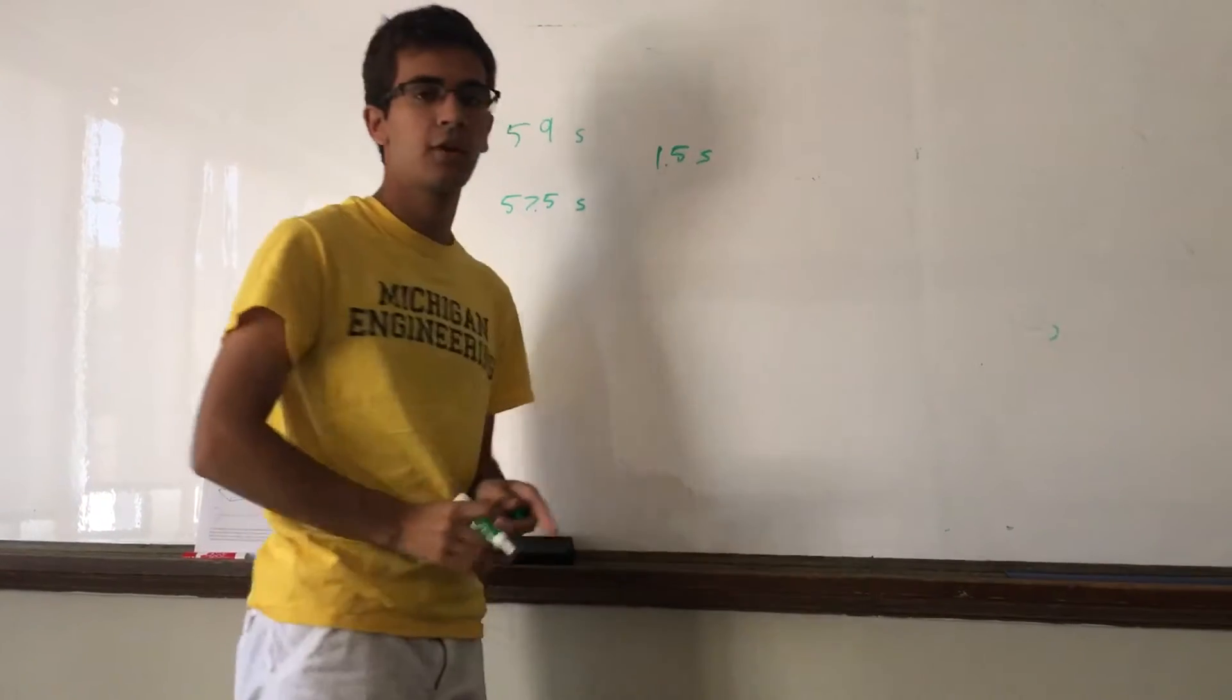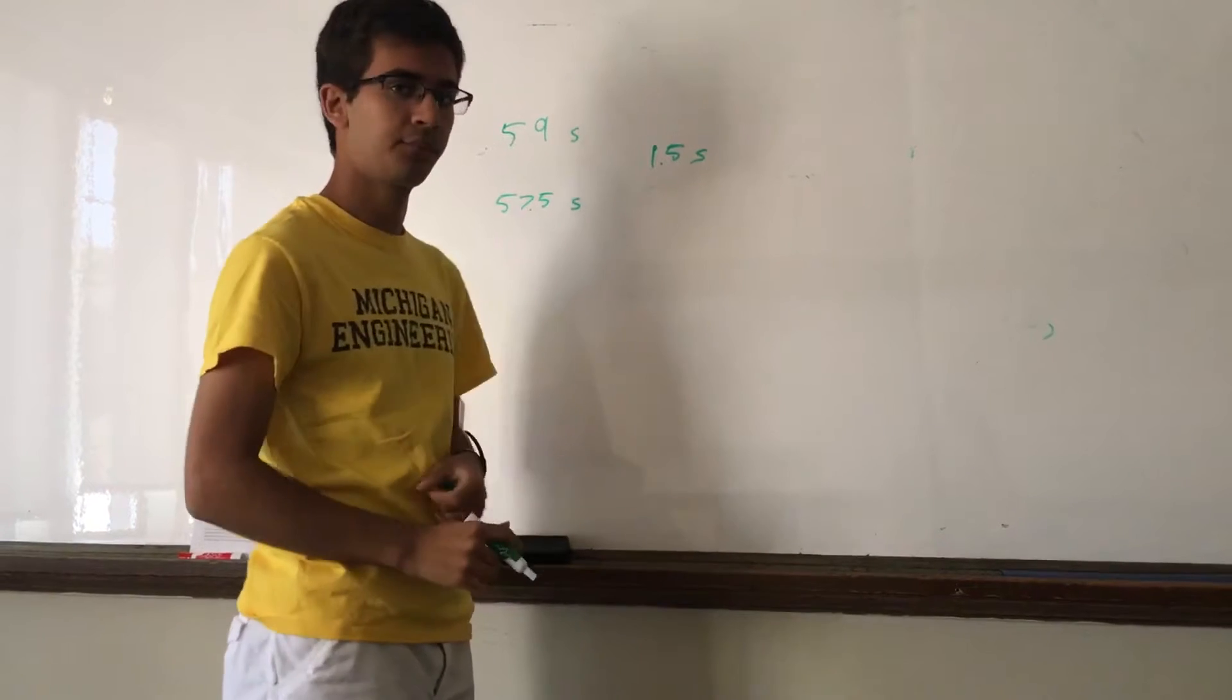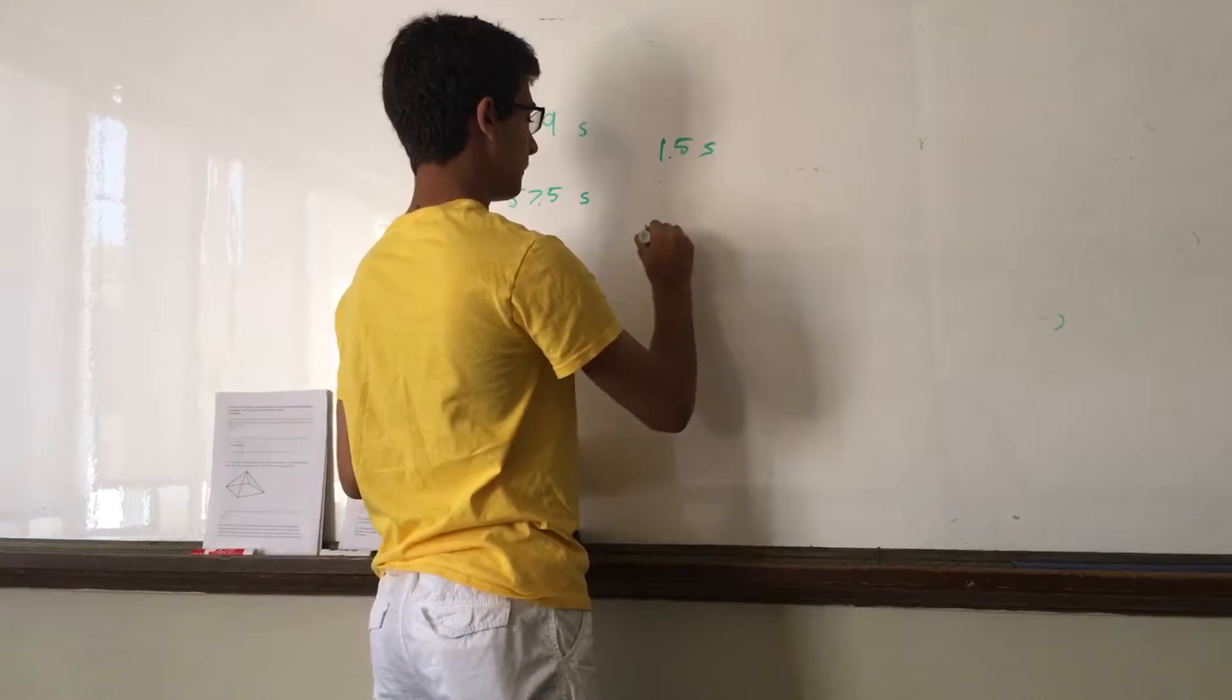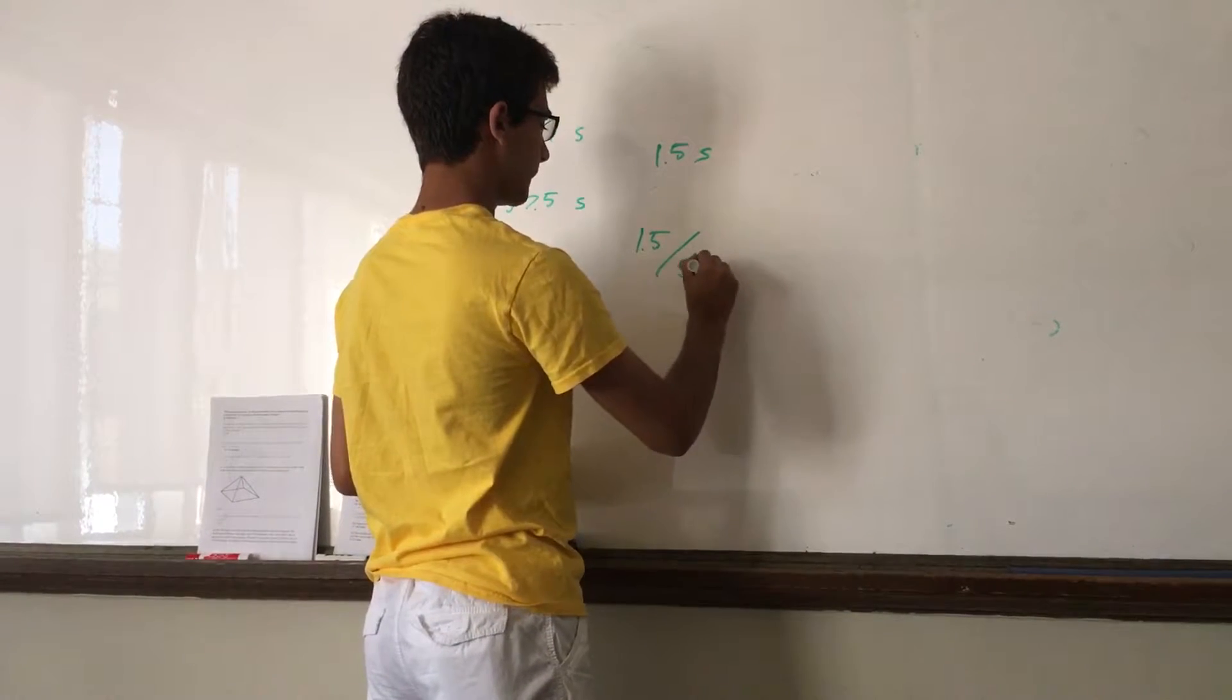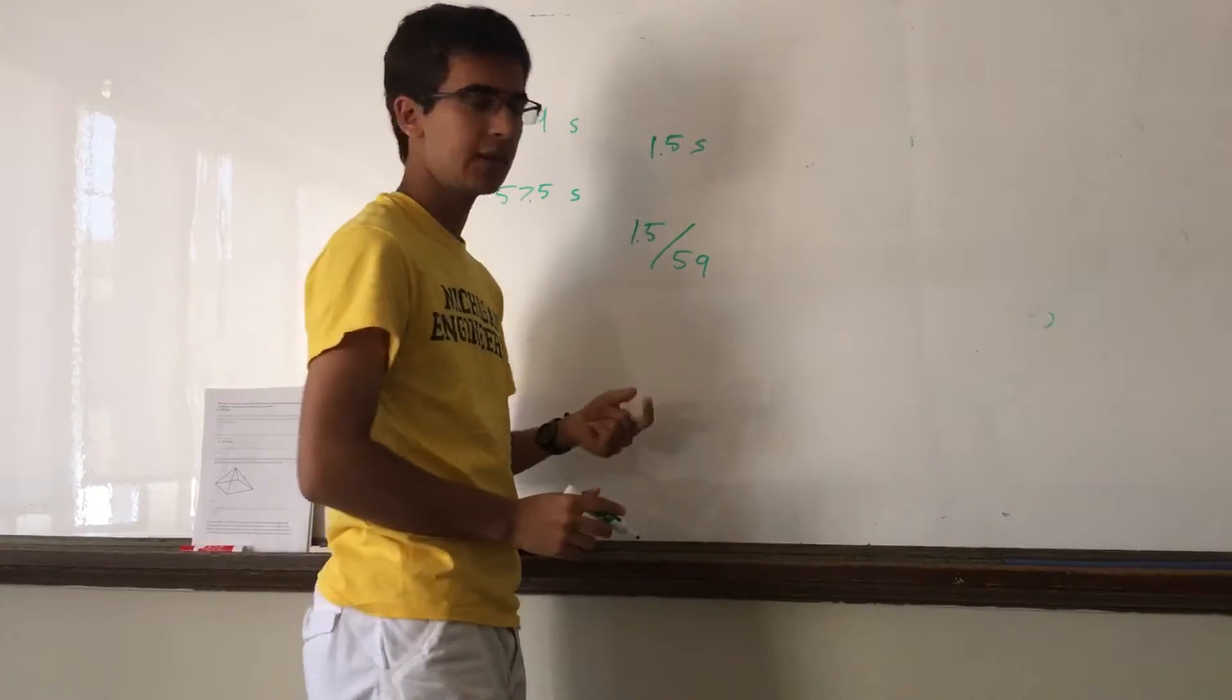So, we need to figure out what percentage 1.5 seconds is out of 59. To do that, we can just divide: 1.5 divided by 59.